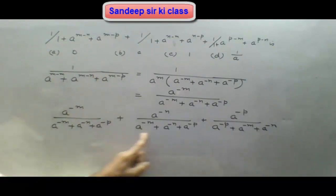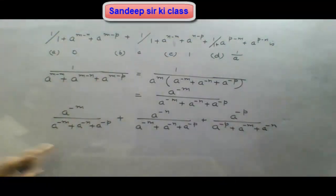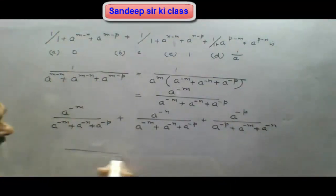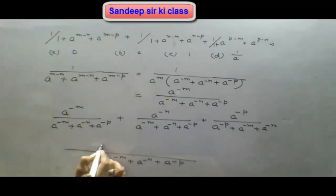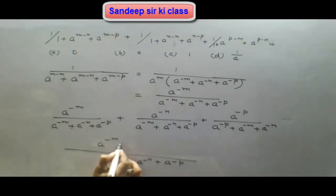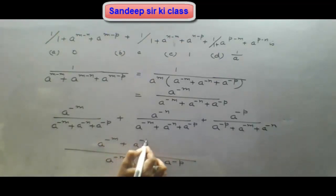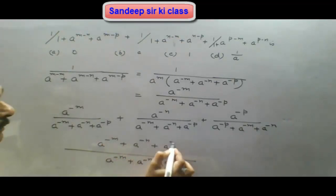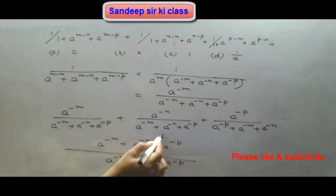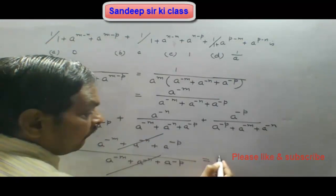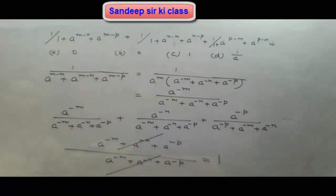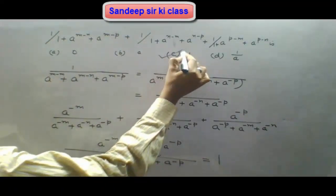The LCM is the same in all three terms: (a^(-m) plus a^(-n) plus a^(-p)). So the numerator becomes a^(-m) plus a^(-n) plus a^(-p), which cancels with the denominator, and we get 1 as the final answer. So option C is correct.